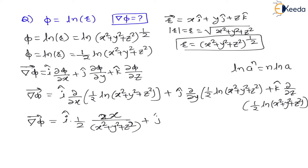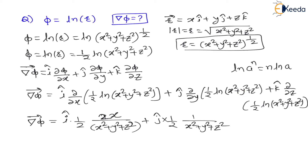For the j-component, the constant 1/2 comes out, and the derivative of ln(x²+y²+z²) with respect to y gives 1/(x²+y²+z²). Here y is the variable and x², z² are constants, so the derivative of y² becomes 2y. Therefore the j-component is (1/2)·[1/(x²+y²+z²)]·2y.